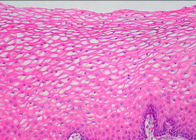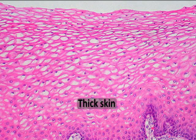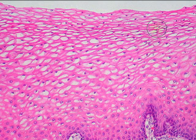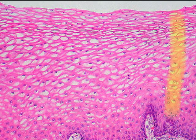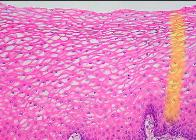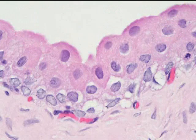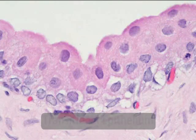Here's another view of stratified squamous epithelium, but in this case found in thick skin, such as the palms of the hand and the soles of the feet, where we have many, many more layers of stratified squamous tissue offering even tougher protection against friction.